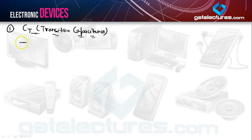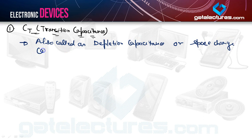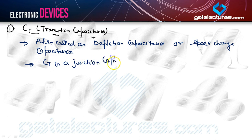The transition capacitance is also known as the depletion layer capacitance, the space charge capacitance, or simply the depletion capacitance. It is the junction capacitance when the diode is operated in reverse biasing.